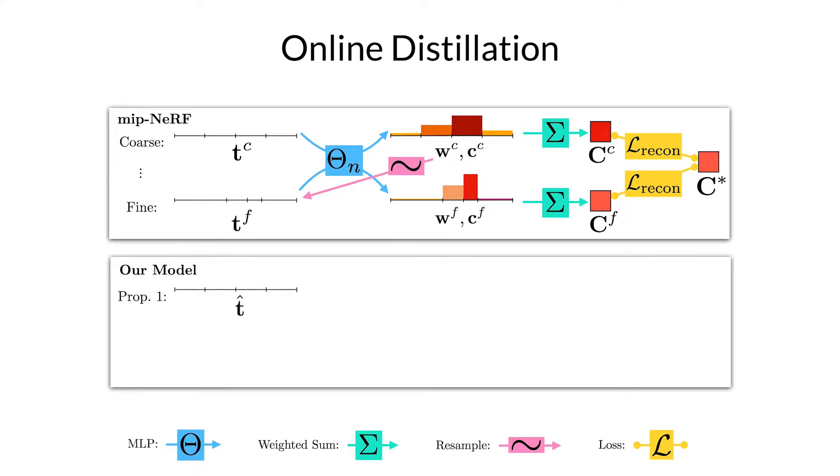We start with a set of evenly spaced histogram intervals and we push them through a proposal MLP to produce a set of weights but no colors. Those weights are then resampled and again this procedure can be done multiple times but we're just showing one resampling for convenience. The last set of intervals produced by this proposal MLP are then pushed through a MLP that behaves exactly the same as in MIPNERF which we'll call the NERF MLP and this gives us a set of weights and colors and those are used to render the pixel color.